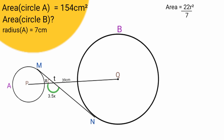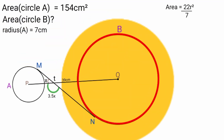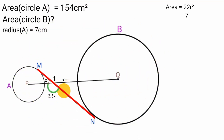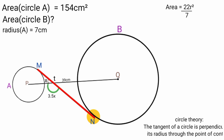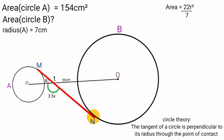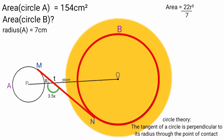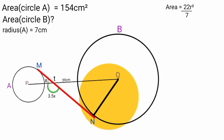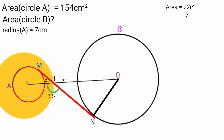22 times 7 is 154, so the area of circle A is 154 centimeters squared. Now coming back to circle B, to find its area we need the length of its radius. We don't have it, but we can find it using the given information. Since line MN is a tangent to the two circles at M and N, the tangent of a circle is perpendicular to its radius at the point of contact. So line MN is perpendicular to the radius of circle B at that point and also perpendicular to the radius of circle A at point M. Let's draw both radii out.